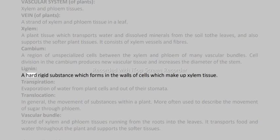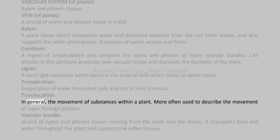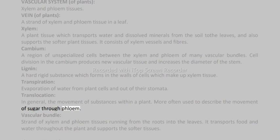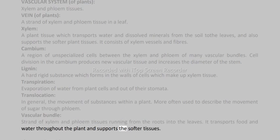Lignin: a hard, rigid substance which forms in the walls of cells which make up xylem tissue. Transpiration: evaporation of water from plant cells and out of their stomata. Translocation: in general, the movement of substances within a plant; more often used to describe the movement of sugar through phloem. Vascular bundle: a strand of xylem and phloem tissues running from the roots into the leaves; it transports food and water throughout the plant and supports the softer tissues.